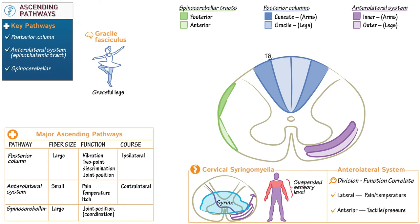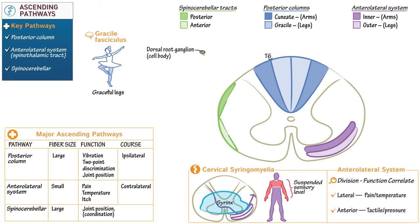Now that we've learned the anatomy of these systems, let's draw out their pathways. The cell bodies for spinal sensory fibers lie within the dorsal root ganglia. They contain a single short axon that emanates from the cell body, passing peripherally to join the motor root and centrally toward the spinal cord. Thus, the spinal sensory axons are pseudo-unipolar.